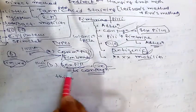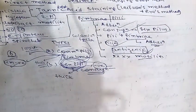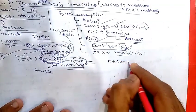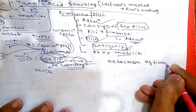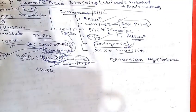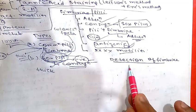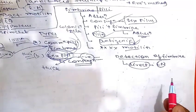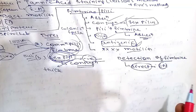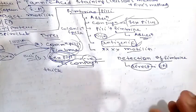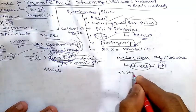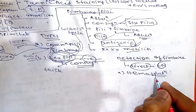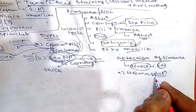Sex pili are found only in gram-negative bacteria. Common pili are found in both gram-negative and gram-positive, especially gram-negative. For detection of pili, electron microscopy is the only method for direct demonstration — there is no other method for direct detection.